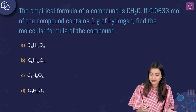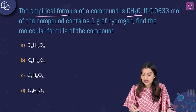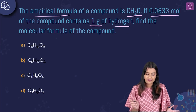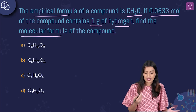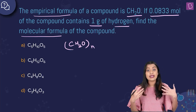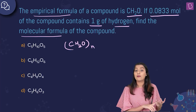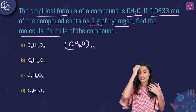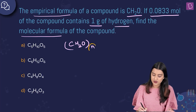The empirical formula of a compound is CH₂O. If 0.0833 moles of the compound contains 1 gram of hydrogen, find the molecular formula of the compound. The empirical formula taken n times gives the molecular formula, so empirical formula weight multiplied by n gives the molecular mass. The goal is to find n.